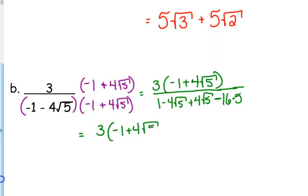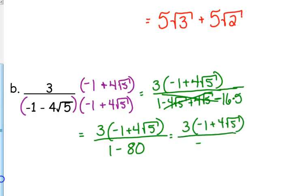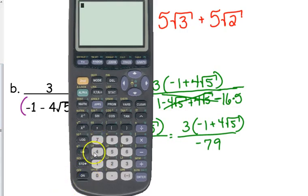Again, still leaving that top in factored form until I simplify the bottom. The 4 square roots of 5 cancel. We've got 1 minus 16 times 5 is 80. So 1 minus 80 is negative 79. And I don't think 79 is divisible by 3.